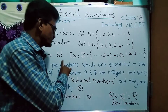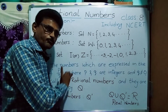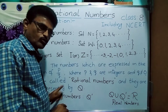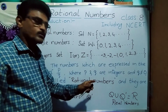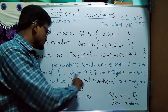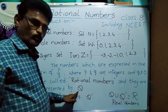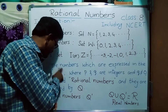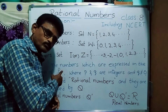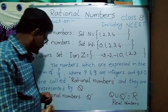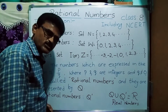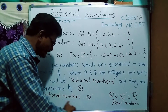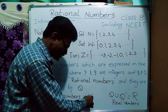The rational number set is denoted by Q. The numbers expressed in the form p by q, where p and q are integers and q is not equal to 0, are said to be rational numbers. Suppose some numbers are not possible to write in the form of p by q — those numbers are said to be irrational numbers. Irrational numbers are denoted by Q dash.